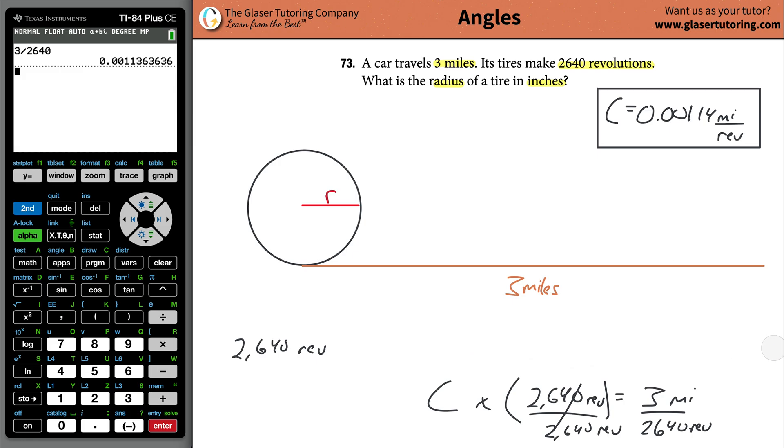Now that we have that in hand, what I'm going to do next is find the radius. How? Well, if I know the circumference, I know the formula that connects circumference to radius. It's the circumference formula, 2 times pi times the radius. So if I simply plug in that circumference of 0.00114, that's going to be miles per revolution. This is going to be 2 pi multiplied by r.